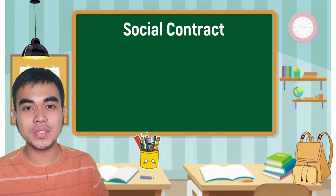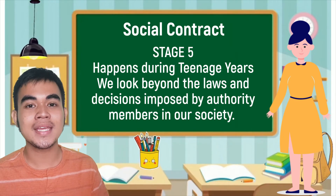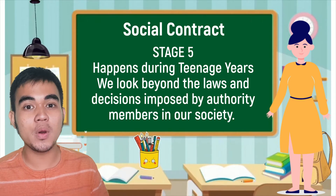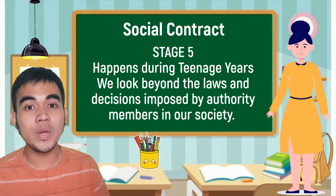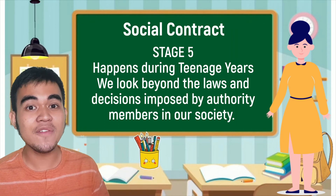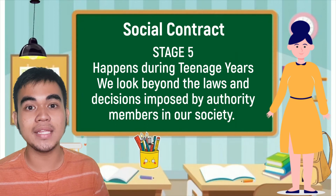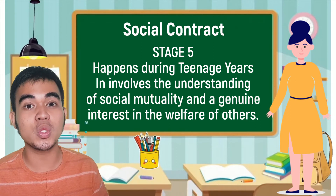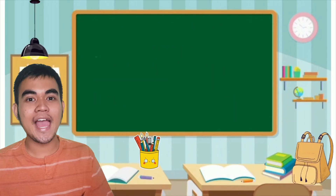Stage 5 is also known as the social contract orientation, which happens during the teenage years. At this stage, we look beyond the laws and decisions being imposed by authority members to the rights and principles that our society is based on. For example, we believe that all men are created equal, even if it is being contradicted by a particular set of laws and customs in our society. Moreover, this stage involves the understanding of social mutuality and the genuine interest in the welfare of others.